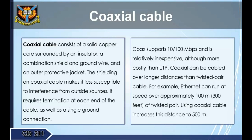Coaxial cable consists of a solid copper core surrounded by an insulator, a combination shield and ground wire, and an outer protective jacket. The shielding makes it less susceptible to interference from outside sources. It requires termination at each end of the cable as well as a single ground connection. Coaxial cable supports 10 to 100 Mbps and is relatively inexpensive, though more costly than UTP. Coaxial can be cabled over longer distances — for example, Ethernet runs approximately 100 m on twisted pair, but using coaxial increases this distance to 500 m.